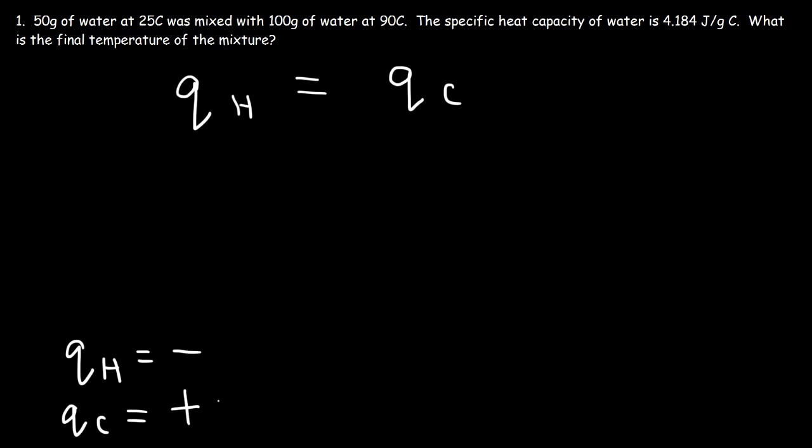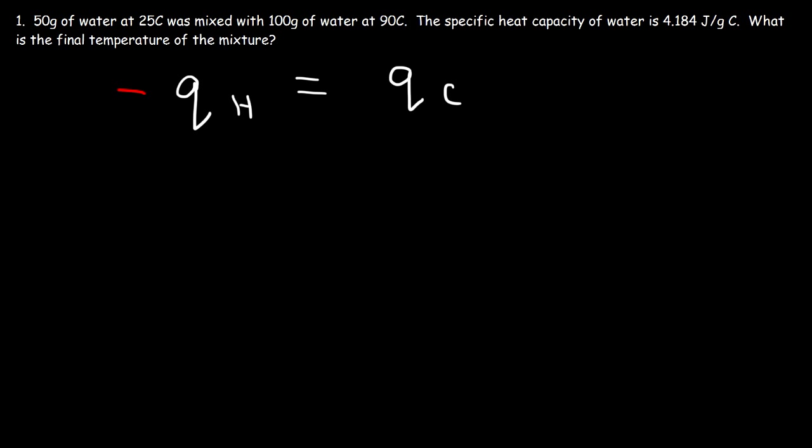Now a negative value does not equal a positive value, so to make this equation work out, we need to put a negative sign on one side of the equation — it could be on the left side or on the right side. This is how you set up a typical heat transfer problem: identify which substance is absorbing heat and which is releasing heat, and map out the transfer of heat energy before you set up an equation.